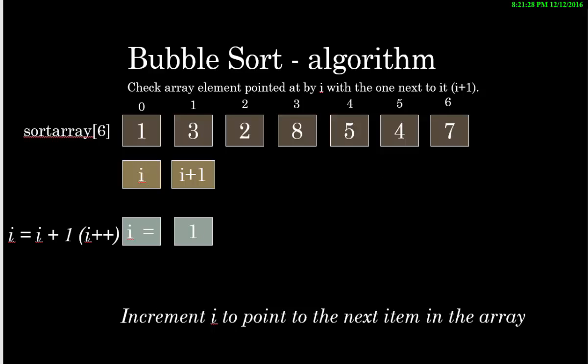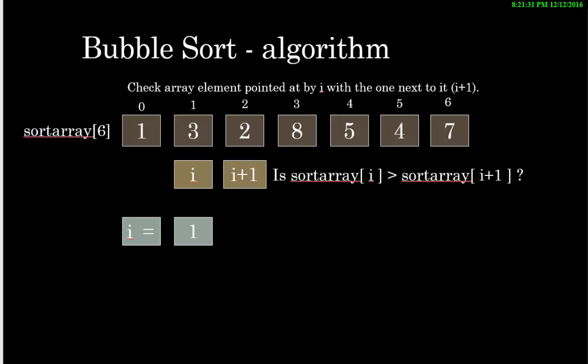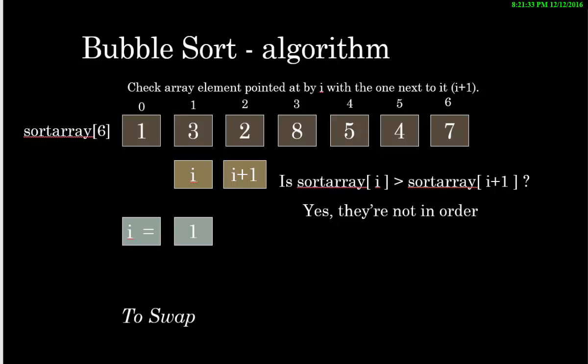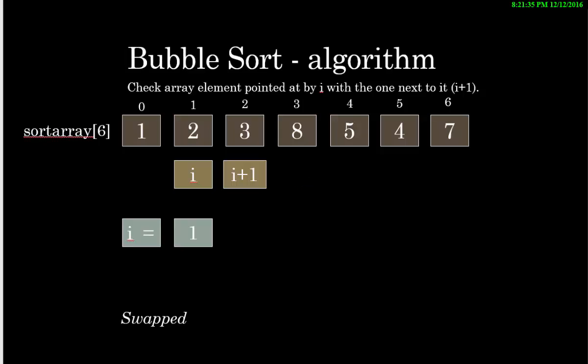You increment I to move to the next element so that you can check the next pair and you ask the same question. They're not in order so you need to swap them around as shown.